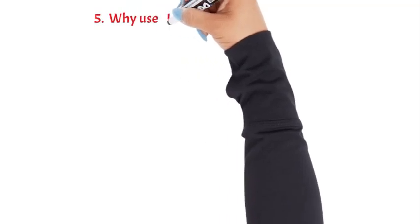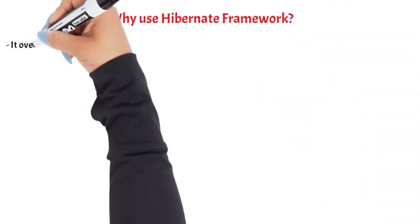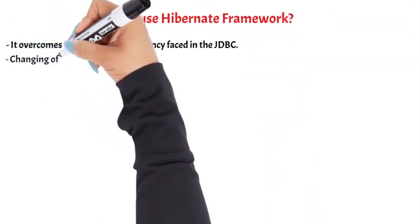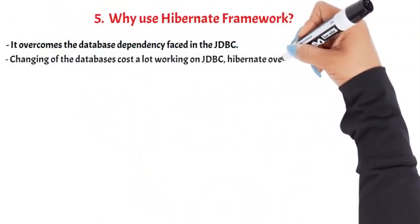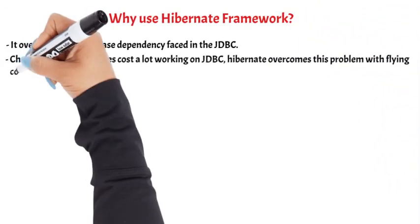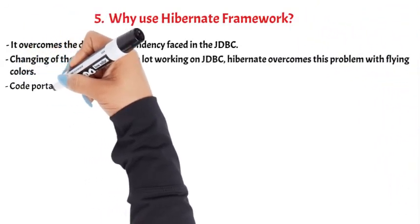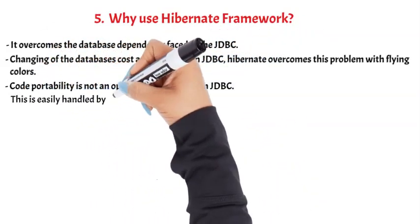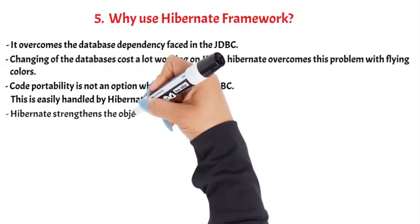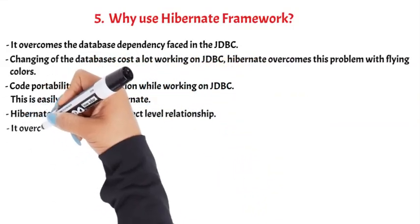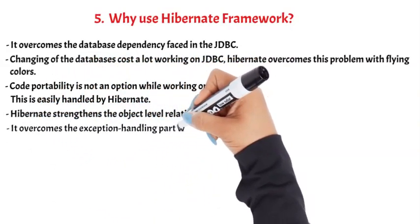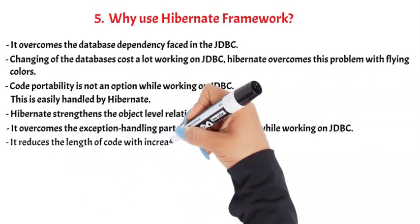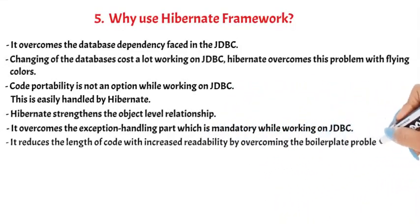Question 5: Why use Hibernate framework? It overcomes the database dependency faced in JDBC. Changing databases costs a lot when working on JDBC — Hibernate overcomes this problem. Code portability is not an option while working on JDBC, but this is easily handled by Hibernate. Hibernate strengthens the object-level relationship, overcomes the exception handling burden mandatory in JDBC, and reduces the length of code with increased readability by overcoming the boilerplate problem.